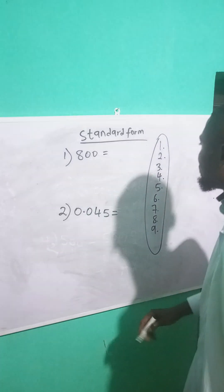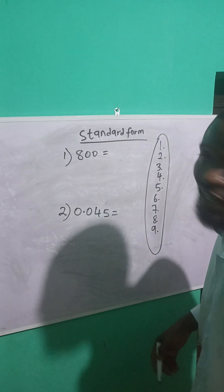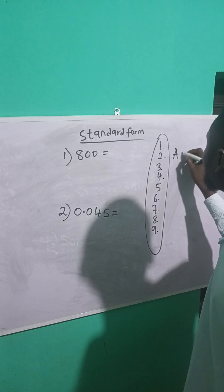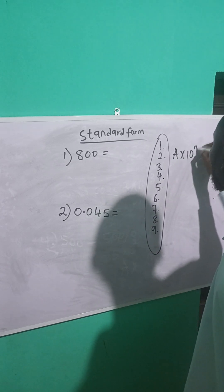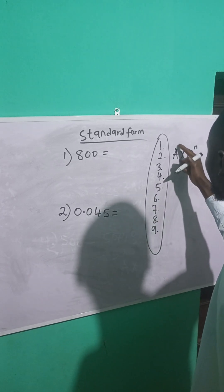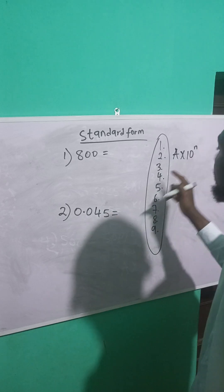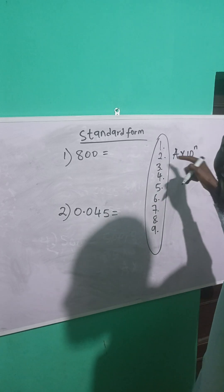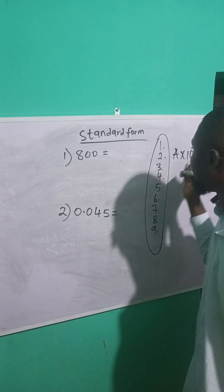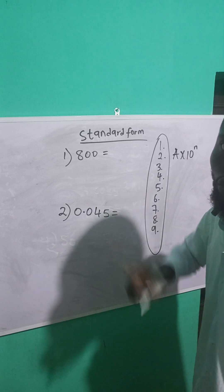So your answer must be within this range, and there's a formula for expressing numbers in standard form. This formula is a times 10 raised to power n. This 'a' is numbers from one to nine times 10 raised to power n. N is the integer that your number will be raised to, which can be either plus or minus.